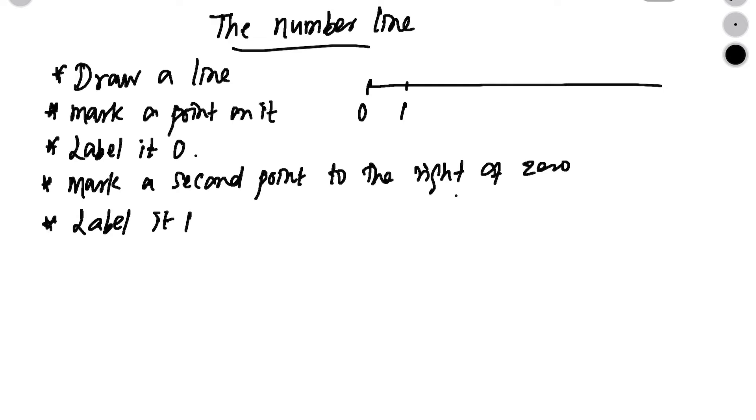So this distance between 0 and 1 is what we call unit distance. It can be any distance. It can be, say, if you are drawing using a scale, it can be 0.5, 1 centimeter and more. But, it is safer to have 1 centimeter for easy measurements and easy markings. So this unit distance must be similar or same to all the numbers you are going to mark after.